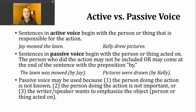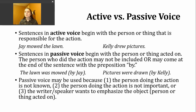Let's look at two quick examples. First: Jay mowed the lawn. Here we know that Jay is responsible for the action of mowing. In the second sentence, Kelly drew pictures. Here we know that Kelly is responsible for the action of drawing. What's different in a passive voice sentence is that it begins with the person or the thing that has been acted on — also referred to as the person or thing receiving the action. In a passive voice sentence, the person responsible for the action might be included, but they also might not, and that's OK.